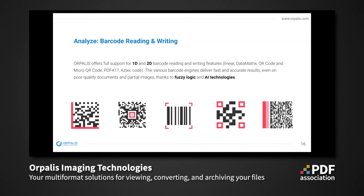Regarding barcodes, Orpalis offers full support for 1D linear and 2D barcode reading and writing features. The various barcode engines deliver fast and accurate results, even on poor quality documents and partial images, thanks to fuzzy logic and AI technologies.